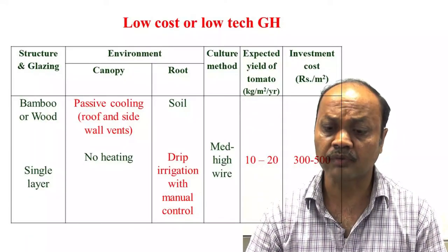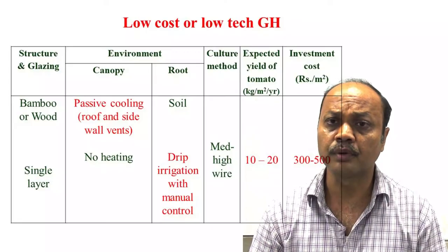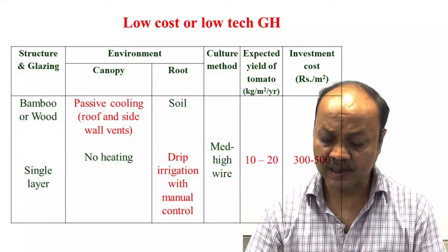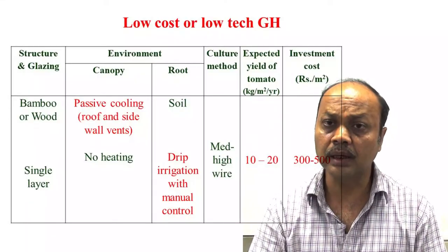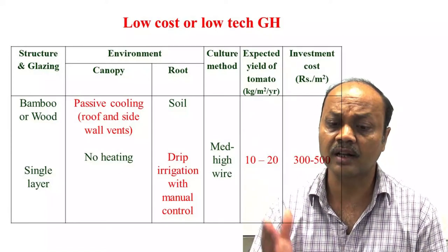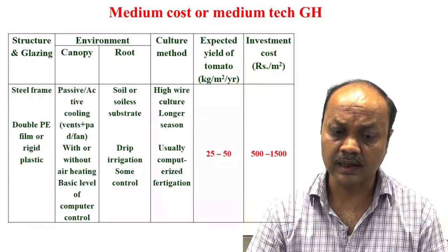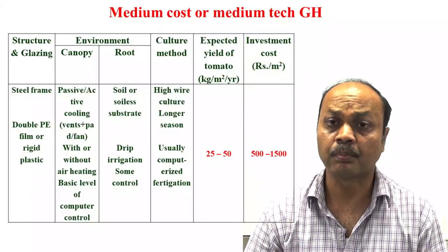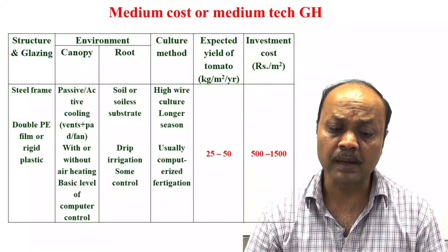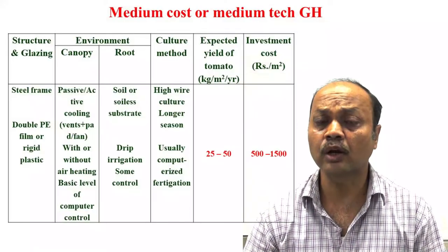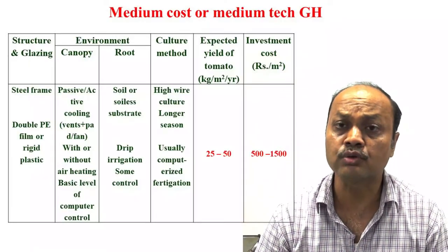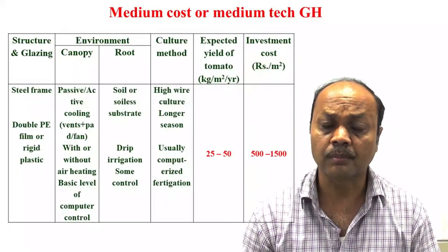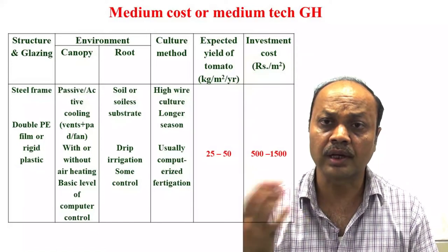Because the microclimate is not perfectly controlled and the size is different from conventional greenhouse, yield will also be less. Yield varies between 100 to 200 ton per hectare for tomato, and cost varies between rupees 300 to 500 per square meter. In medium cost, environment, canopy management, and root management improve. Fan-pad cooling system may sometimes be used, and heating system in India is not normally used commercially.